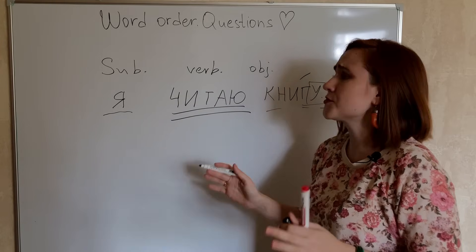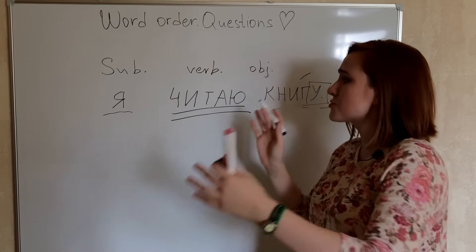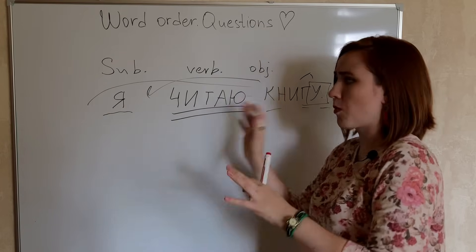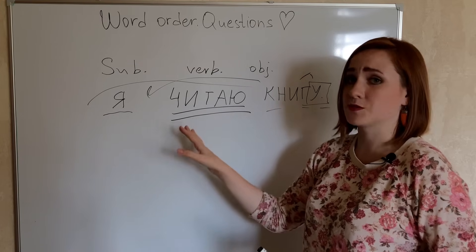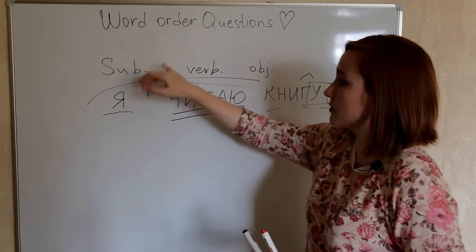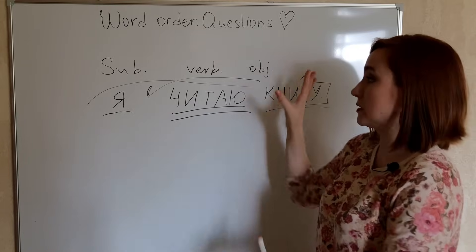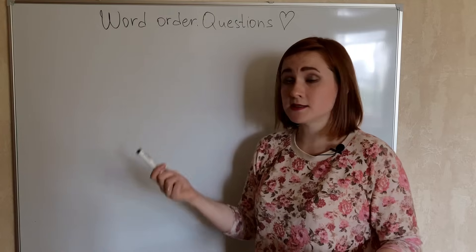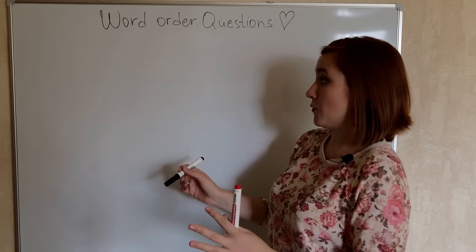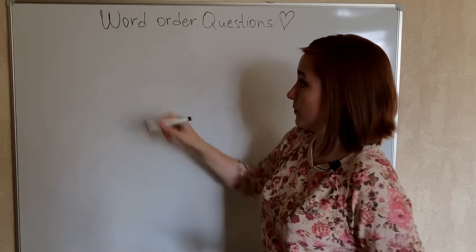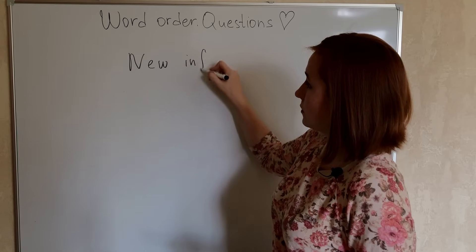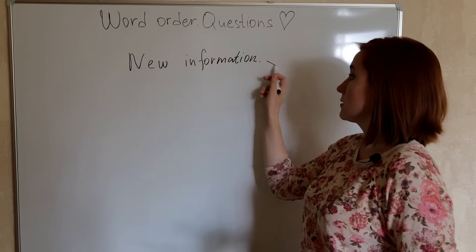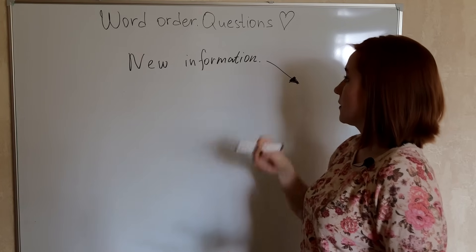This basic word order is the most typical for most languages. So if you are a beginner and even an intermediate learner, stick with this. Don't try to play with the word position. It's advanced, it's for native speakers. It's much easier to stick with this subject-verb-object order. Of course, you will certainly meet different word order in reading, in listening, so you will have to deal with it anyway. Here's a quick tip for you: new information usually goes to the end of the sentence.